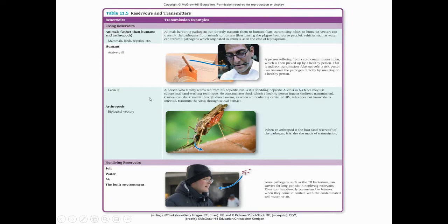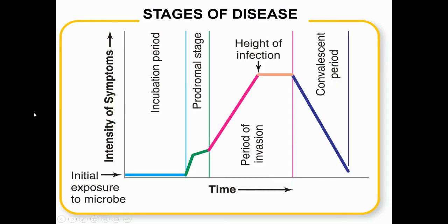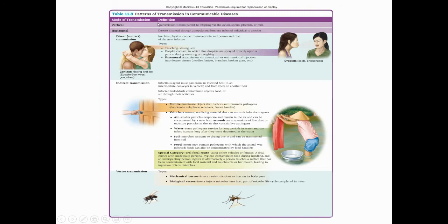Reservoirs can be animals other than humans, humans that are actively ill, or carriers with persistent infections. Arthropods can be a vector, and we can also have non-living reservoirs like soil, water, air, or the built environment. Communicability tells how contagious something is — how likely it is to spread between people.